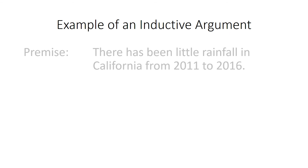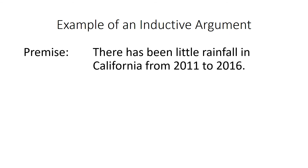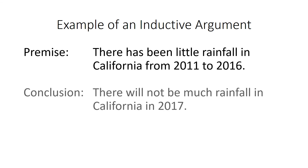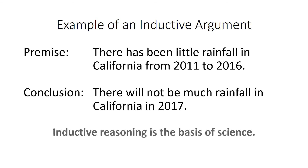Here's an example of an inductive argument. Premise: there has been little rainfall in California from 2011 to 2016. Notice this statement is dealing with specific observations — five years worth of specific observations about rainfall in California. The conclusion was: there will not be much rainfall in California in 2017. Inductive reasoning is the basis of science. However, California actually saw so much rainfall in 2017 that it came out of a six-year drought, showing how new observations can affect inductive conclusions.